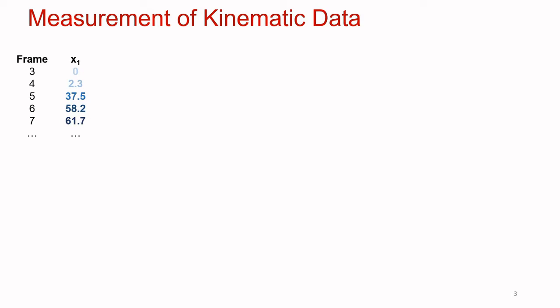Here we see some data collected using a motion tracking system. In the first column we have the frame number, and in the next column we see the value of position measured on that frame. The column is labeled x1, so we can assume we're looking at the x-coordinate for marker number 1, which was placed on the shoulder. The first thing to ask when you see data like this is: what are the units? Are they inches, feet, millimetres, centimetres, or metres? Then ask what it means for the numbers to be higher or lower. In this case the units are millimetres, and a larger x value is associated with having moved anteriorly.